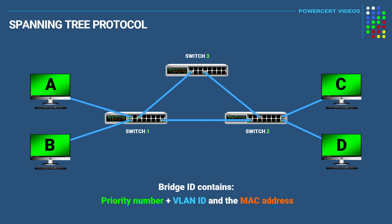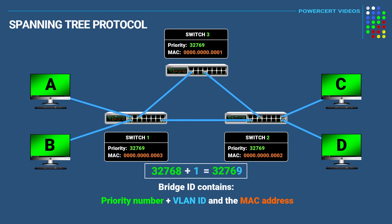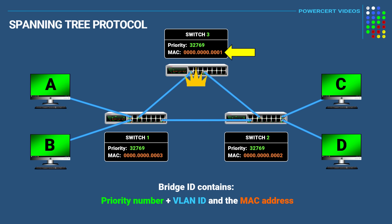The Bridge ID consists of the switch's priority number plus the VLAN number, along with its MAC address. By default, each switch will have a priority value of 32768. If all the switches are on VLAN 1, we add 1 to the priority value, giving us 32769. Since all the switches on this network have the same priority value, that's a tie, and the tiebreaker will be determined by the MAC address — whichever switch has the lowest MAC address will be elected as the root bridge. In this example, switch 3 has the lowest MAC address and will be elected as the root bridge.